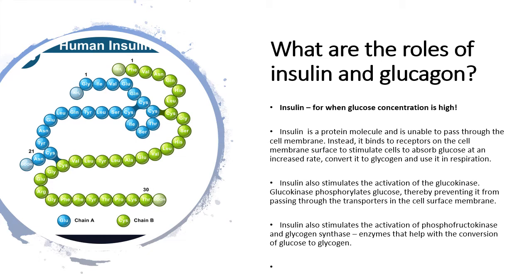If you remember respiration, when we have glucose in glycolysis it is first phosphorylated to glucose phosphate before it goes on to become fructose phosphate and so on — if you've forgotten that, please watch the respiration videos. Insulin will also stimulate phosphofructokinase and glycogen synthase, and these enzymes help with the conversion of glucose to glycogen. So insulin is simply a signal molecule that allows for all of these reactions to happen.